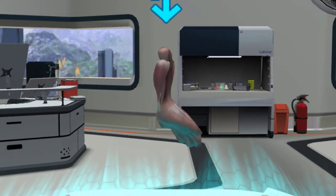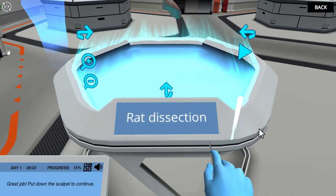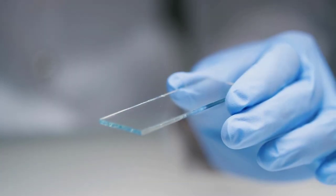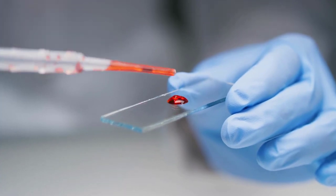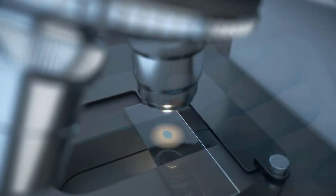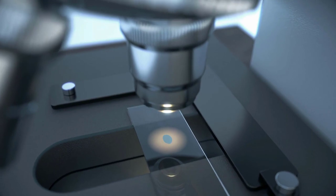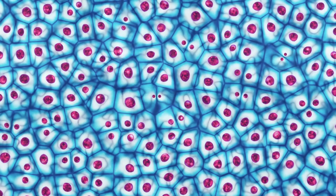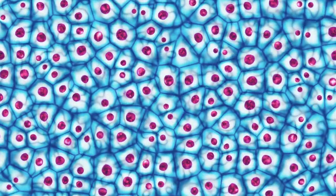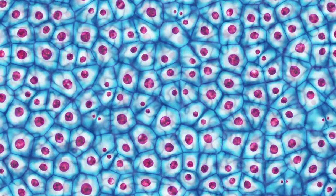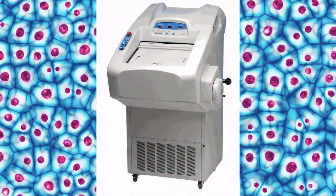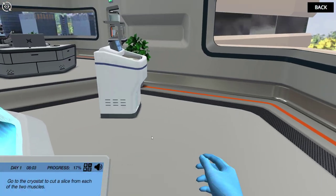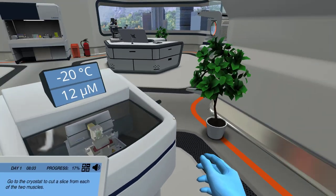Great job! Put down the scalpel to continue. To determine the fiber composition of each muscle, you can dye muscle components and organelles using chemicals. This is called histochemistry. Afterwards, you can distinguish the different types of muscles under a microscope. This only works with very thin slices of muscle tissue, about 12 micrometers thick. You'll need a cryostat to cut a muscle slice this thin. Luckily, we have one in the lab. Go to the cryostat to cut a slice from each of the two muscles.